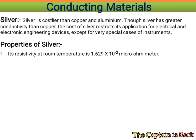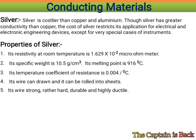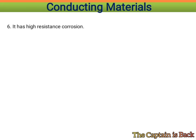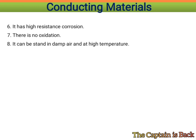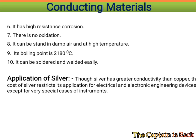Properties of silver: its resistivity at room temperature is 1.629×10⁻² micro-ohm-meter, specific weight is 10.5 g/cm³, melting point is 916°C, and temperature coefficient of resistance is 0.004 per degree Celsius. It can be drawn and rolled into sheets, is strong, hard, durable, and highly ductile. It has high resistance to corrosion, no oxidation, and can withstand damp air and high temperatures. Its boiling point is 2180°C. It can be soldered and welded. Its application is limited to special instrument cases due to high cost.